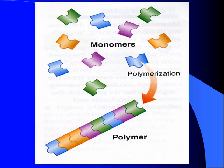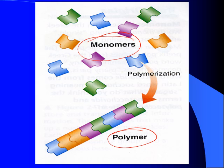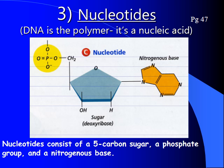The first topic we're going to go into is called nucleic acids. Nucleic acids are the polymers — long chains made up of monomers called nucleotides. So nucleotides are the monomers and nucleic acids are the polymers. The nucleotides, again the individual links, make up nucleic acids, and the most common nucleic acid you probably know of is DNA.